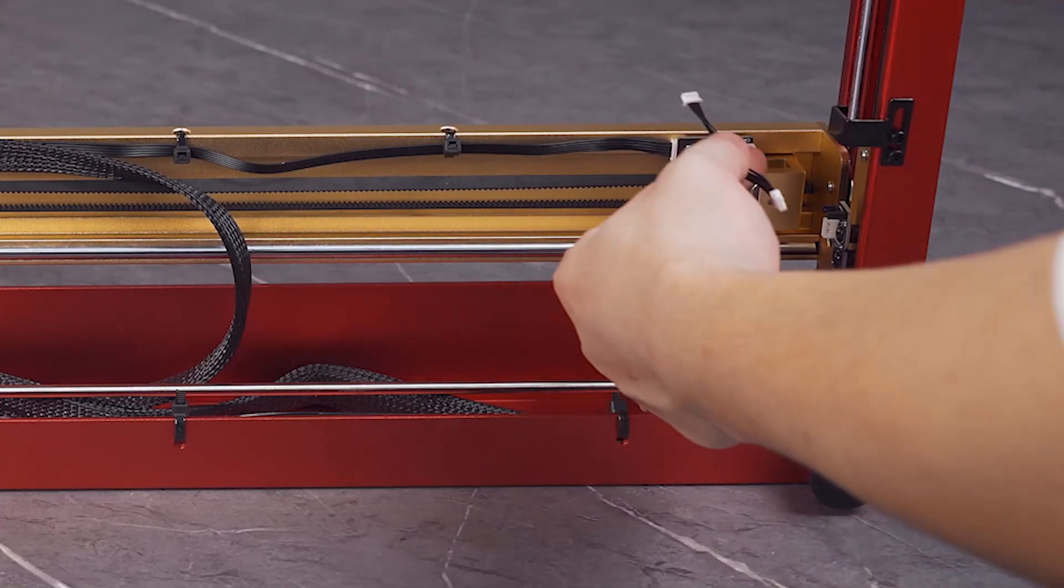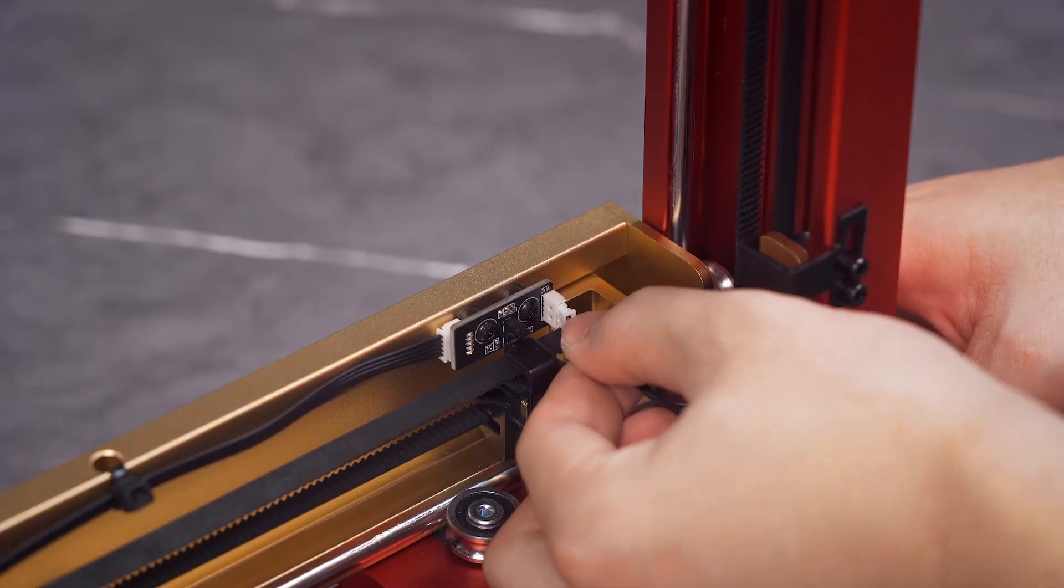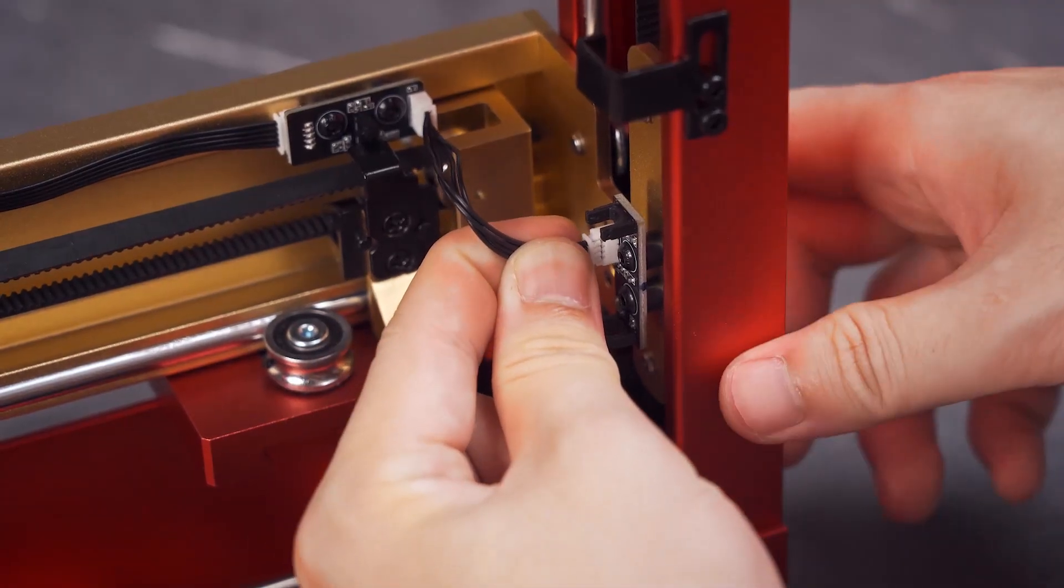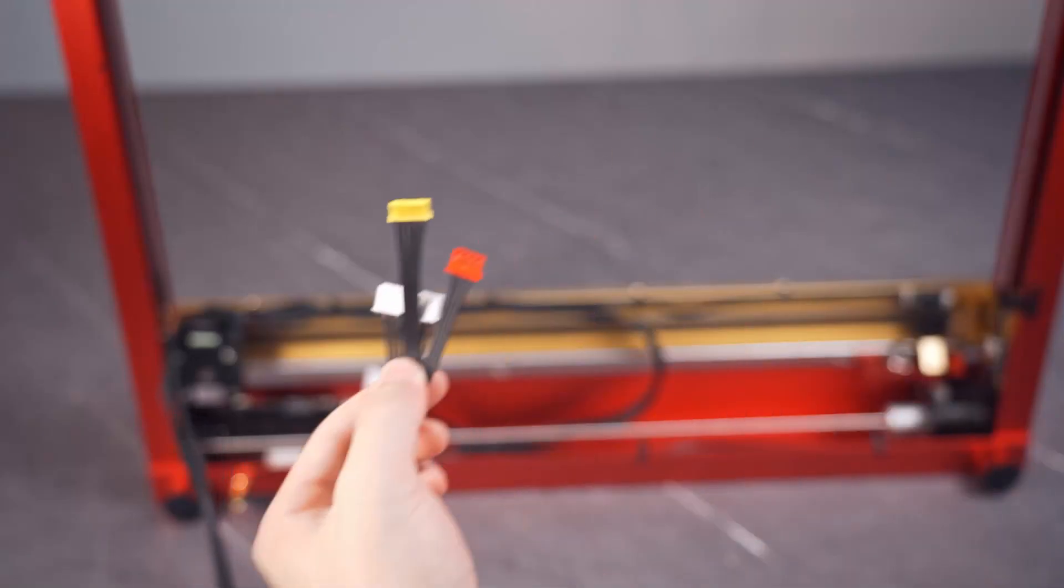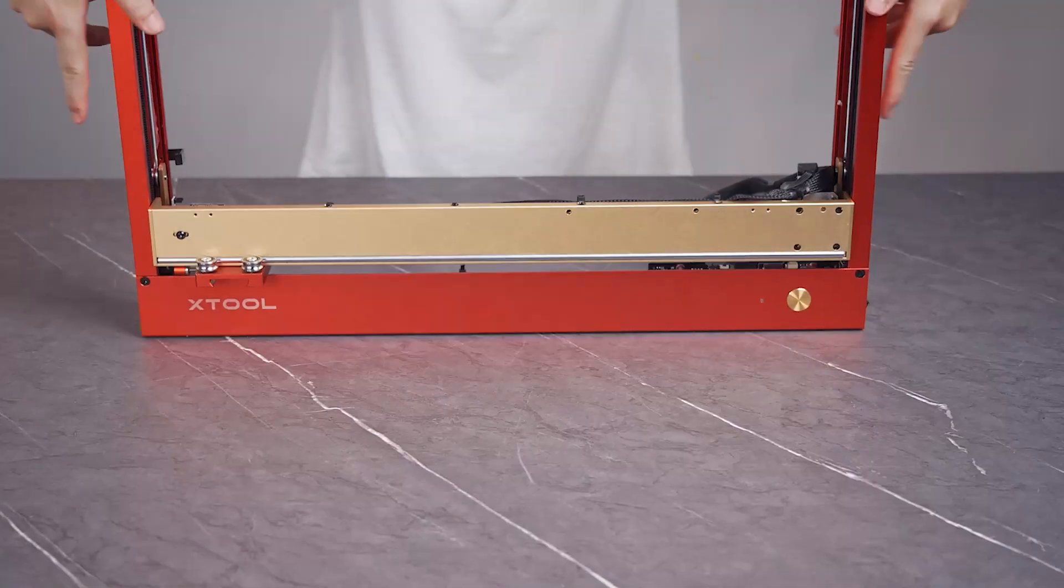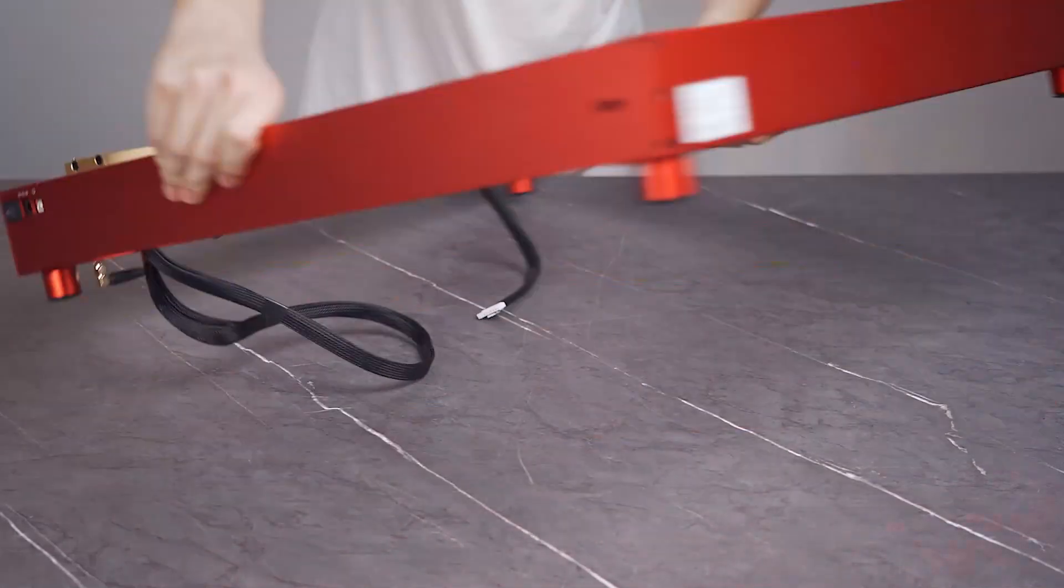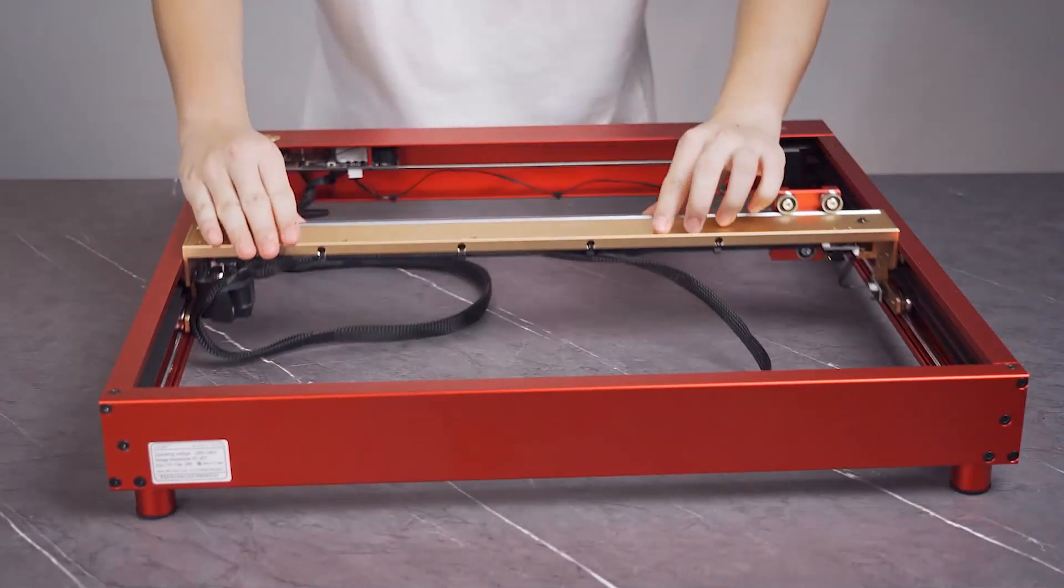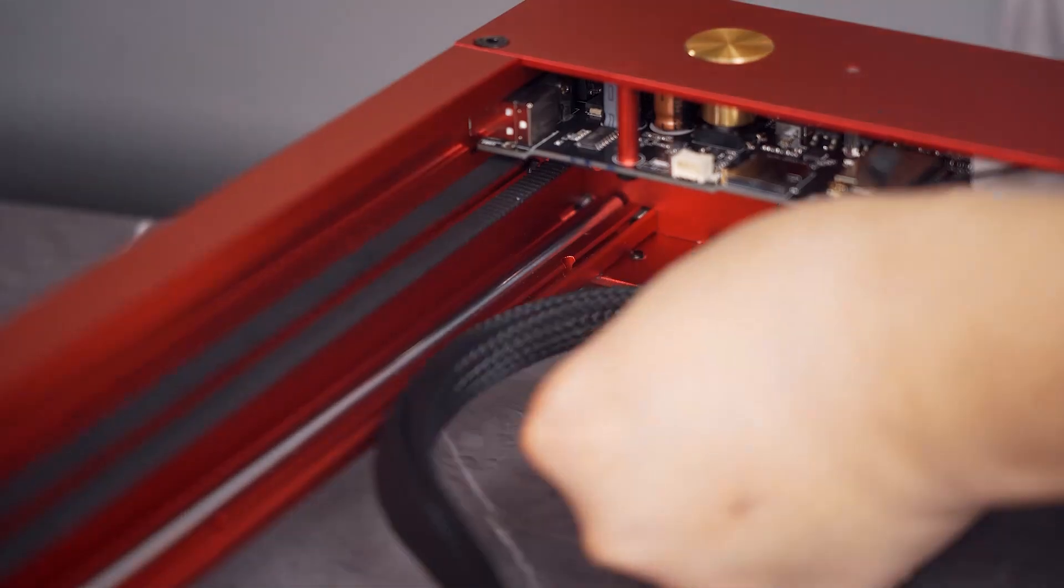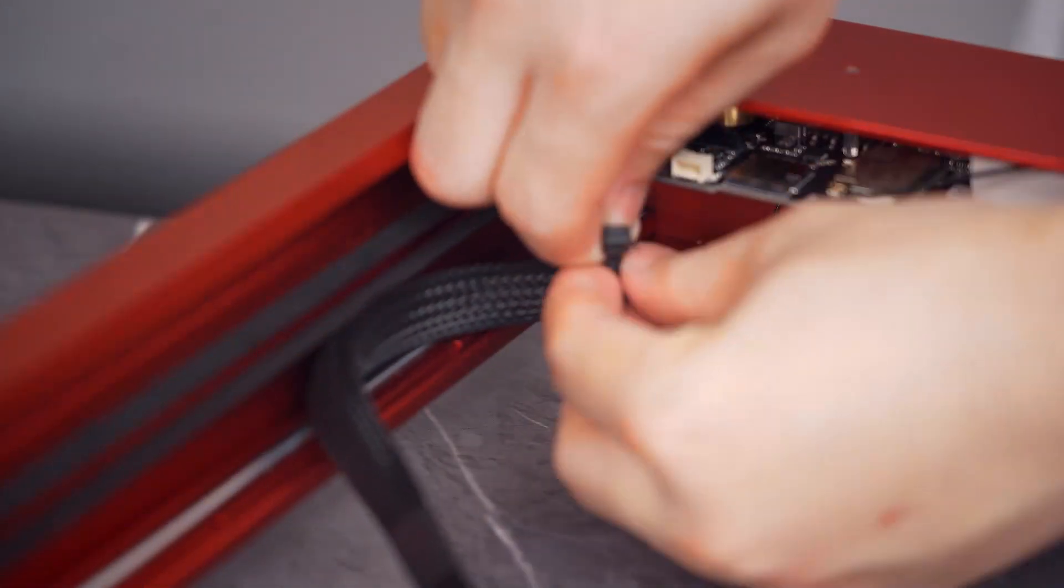Connect the limit switch component on the middle plate to the one on the slider of the left plate. Insert the connectors of the laser module, motor, and limit switch connection cables into the ports on the main control board, respectively. Use cable ties to fix the connection cables on the right plate.